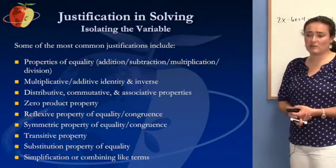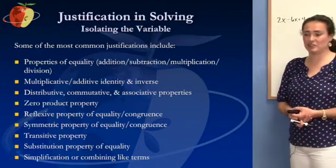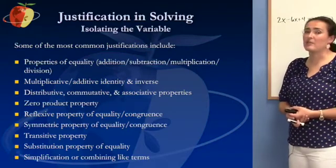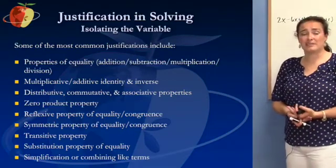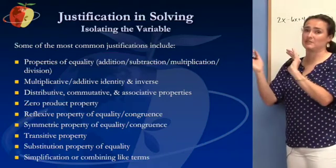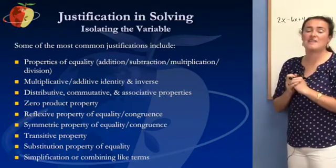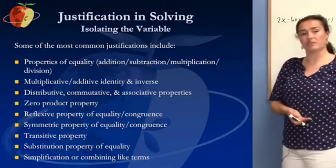Next we have the distributive, commutative, and associative properties that have to go with multiplication. We have the zero product property. That's a big one when we're solving quadratics. For example, if I was solving x squared plus 7x plus 12, I would factor that as x plus 3 times x plus 4 equals 0. And then to solve that, I would set each factor equal to 0 using what's called the zero product property.